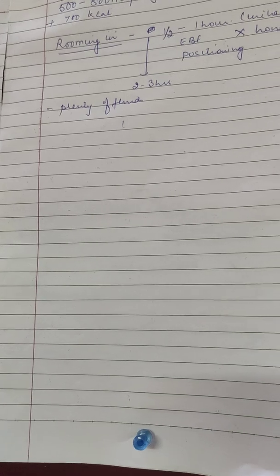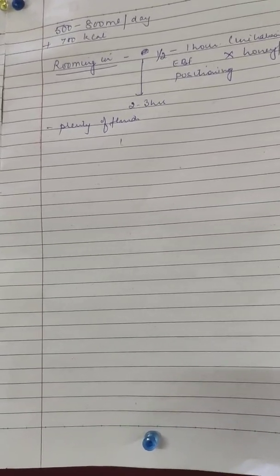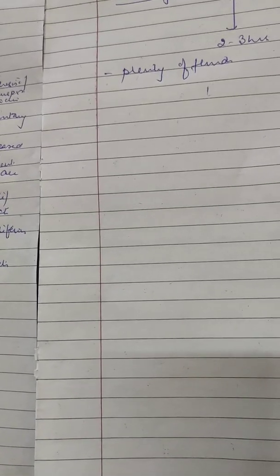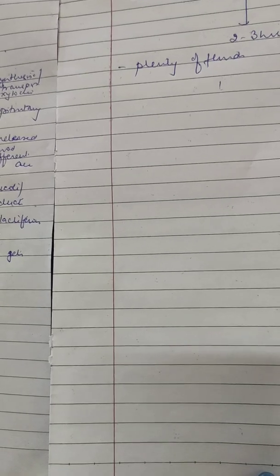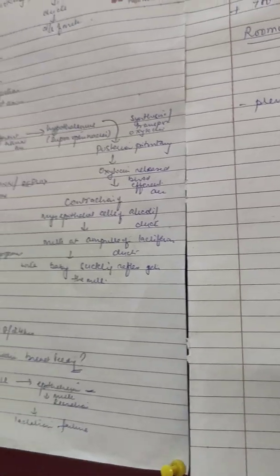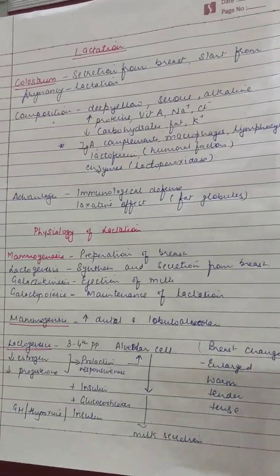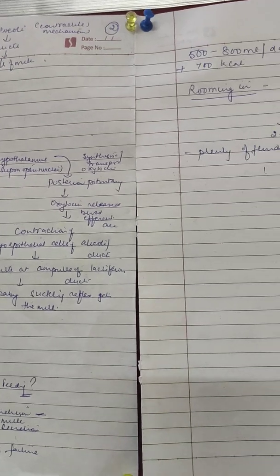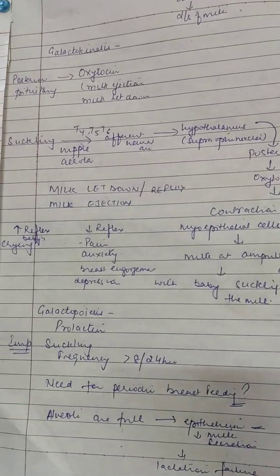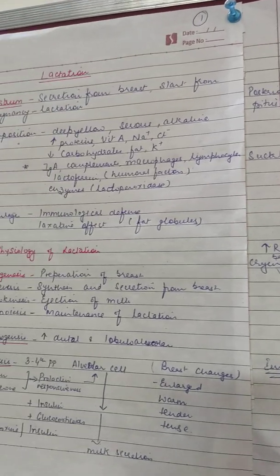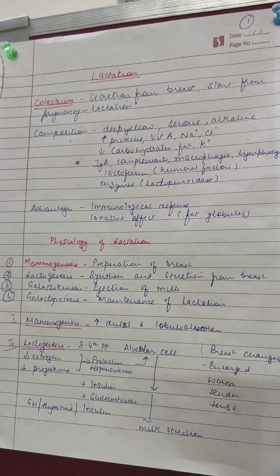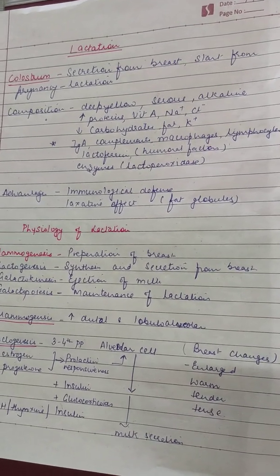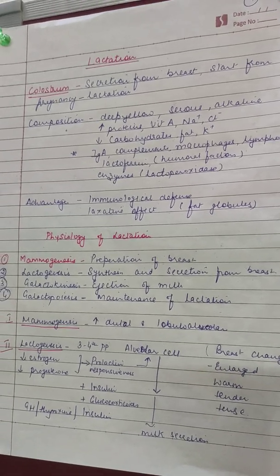In many conditions lactation has to be suppressed — for example if the baby died in the early neonatal period or there was an intrauterine death and the baby is not alive. In those cases we do not want breast secretions or milk production. The female is advised to wear tight breast support, given painkillers to reduce engorgement, advised not to express milk, and various medicines are available to stop milk production in the breast.